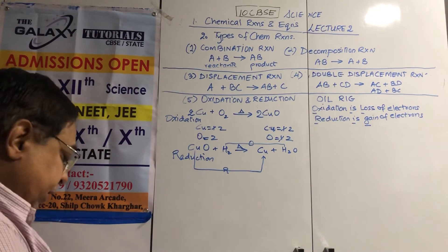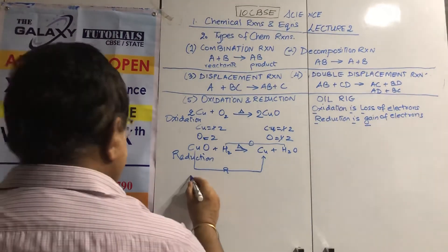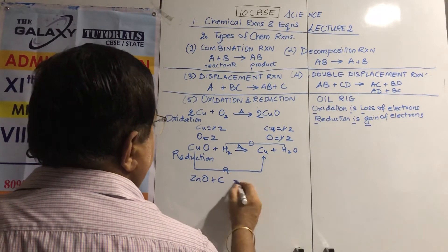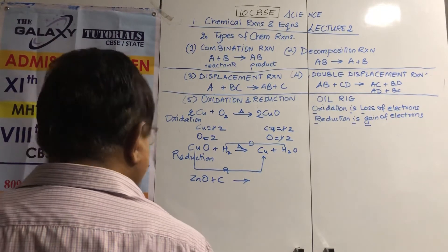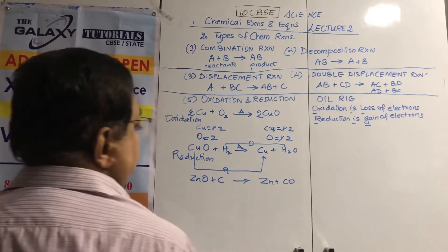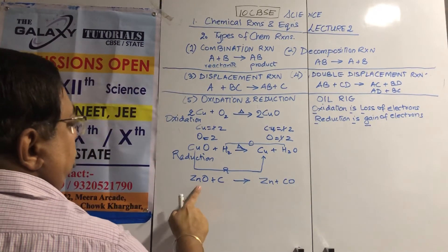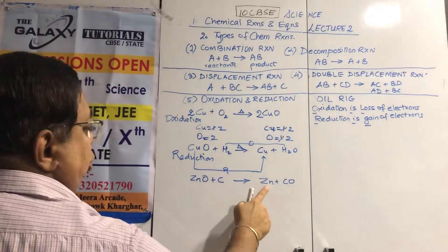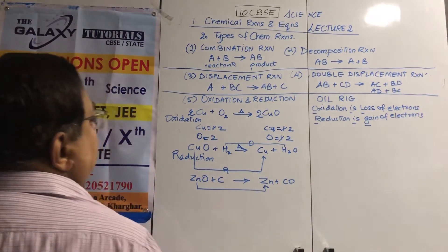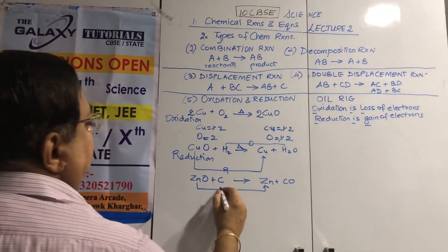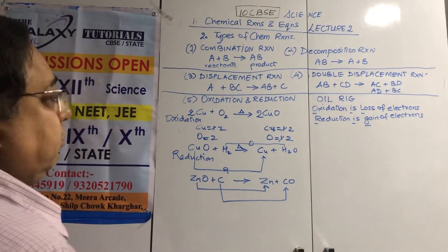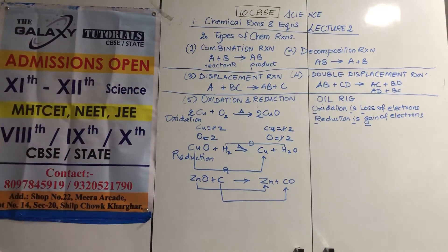Oxidation and reduction occur in pairs. Another example: ZnO plus carbon gives zinc plus carbon monoxide. Zinc oxide loses oxygen — so zinc is reduced. Carbon gains oxygen — so carbon is oxidized.